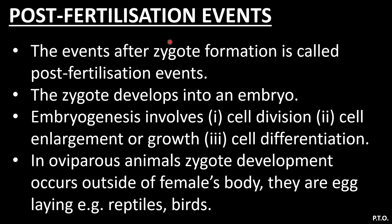Post-fertilization events are the events after zygote formation. The zygote develops into an embryo — this process is called embryogenesis. Embryogenesis involves cell division and cell differentiation. 'Genesis' means formation; the embryo is formed from the zygote, and the two main processes driving this are cell division and cell differentiation.